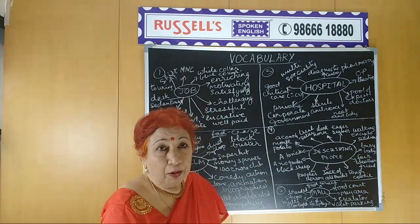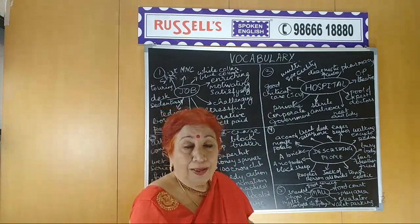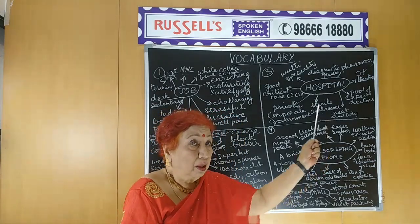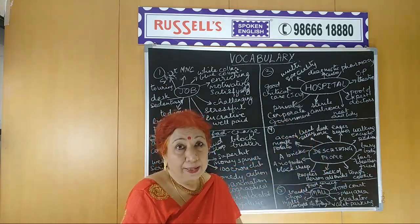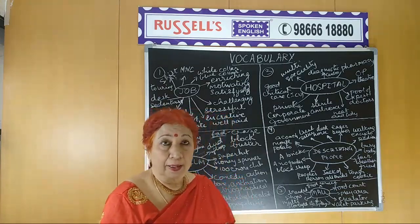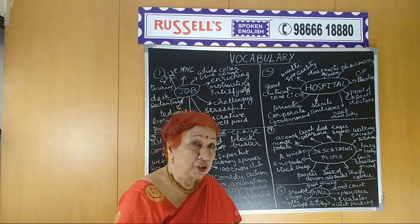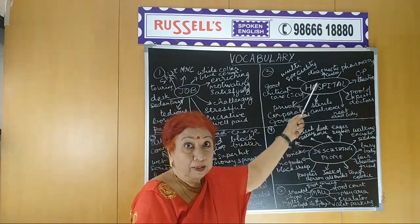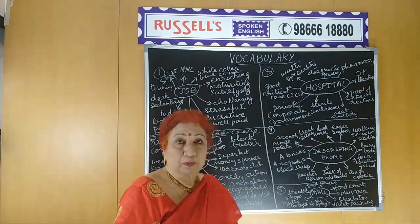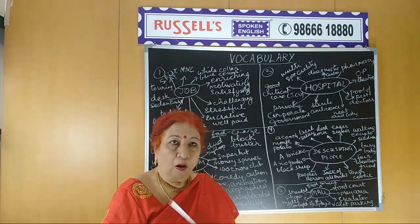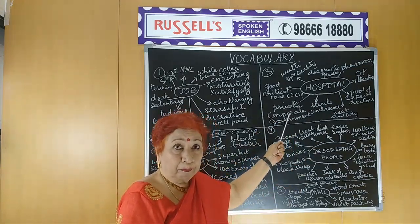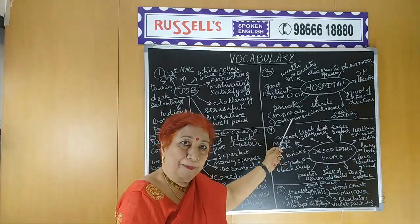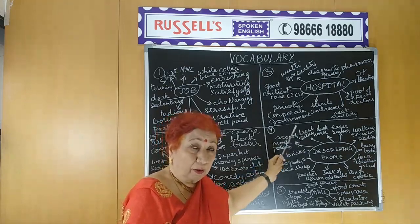When a patient is taken in a critical condition, you need good critical care units — those must be well maintained. That is an essential part of a good hospital. You can recommend a hospital by saying it's a multi-speciality hospital with good critical care units. Or you can describe it by type: it's a private hospital, a corporate hospital, or a government hospital — depending on who runs it.